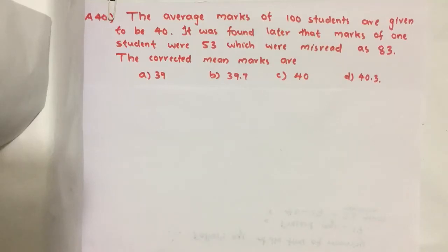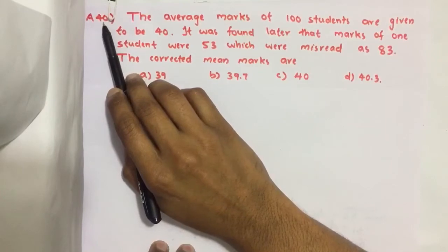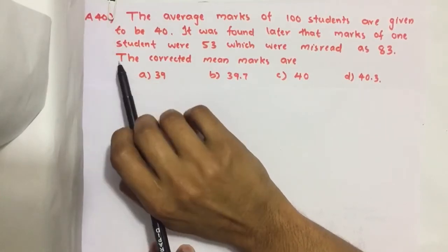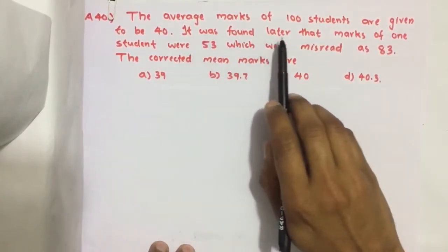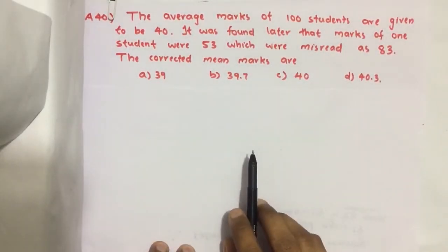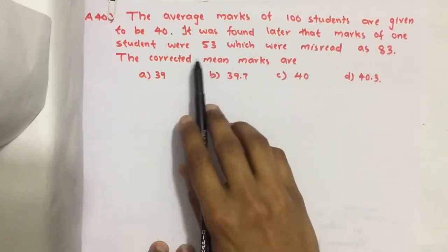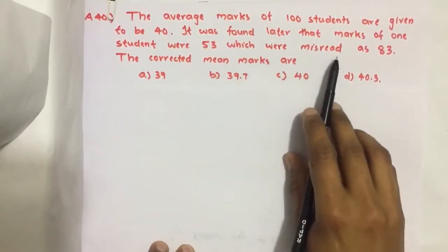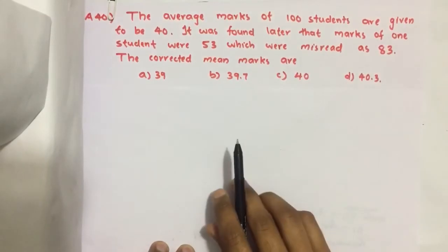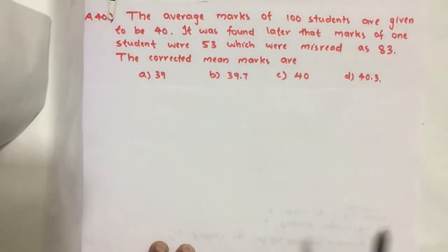Hello everyone, here I am going to solve 2019 CSAT question number 40 from question paper series A. The average mark of 100 students are given to be 40. It was found later that marks of one student were 53, which were misread as 83. The corrected mean marks are - we have to find what is the corrected average.